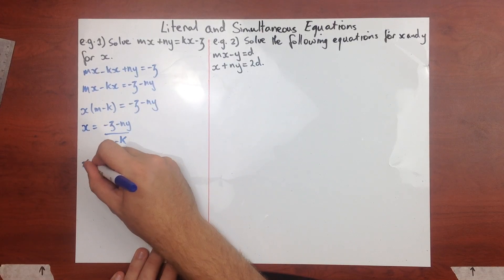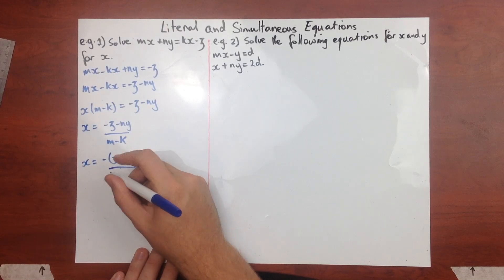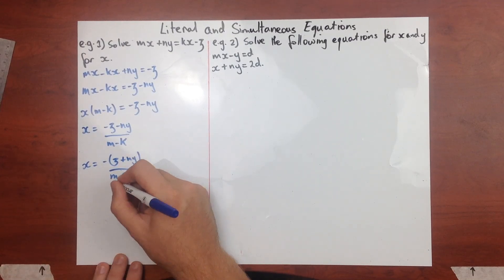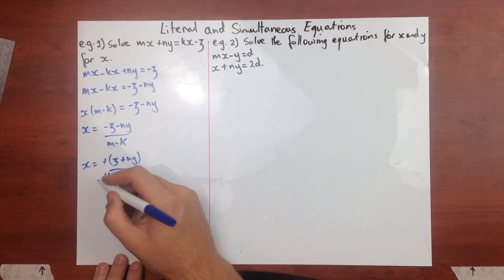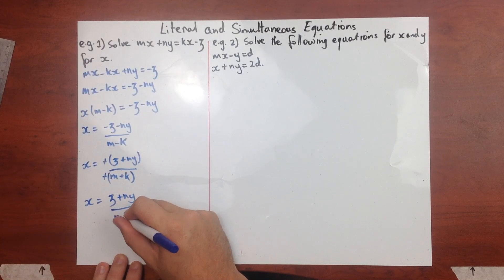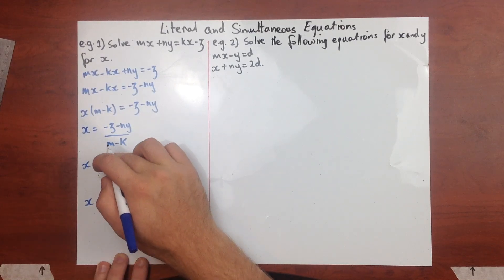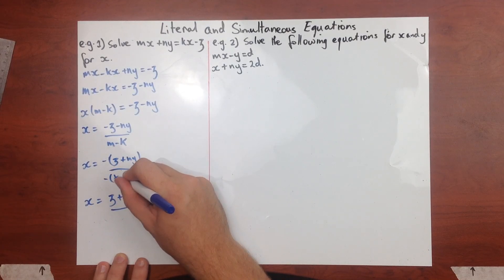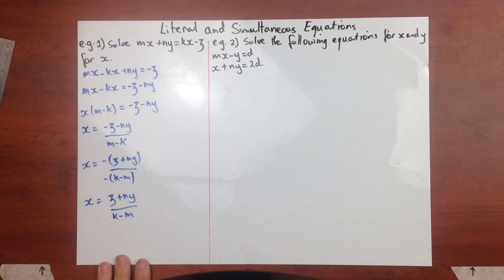To neaten this up, I'll take a negative out so that we can switch the signs around. Taking a negative out of the numerator and adjusting the denominator gives us x equals (z plus ny) over (k minus m), which removes the negatives from the top line and makes it a bit cleaner.